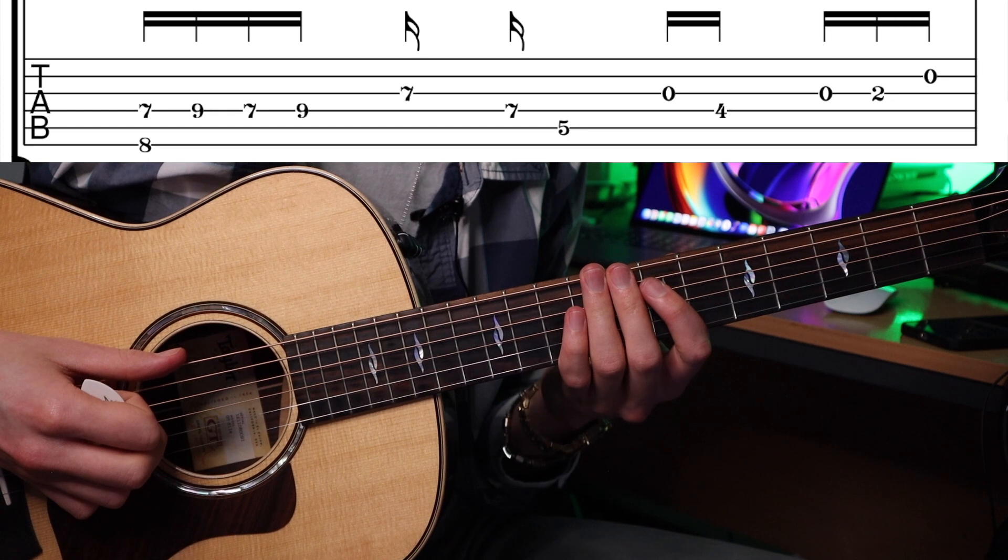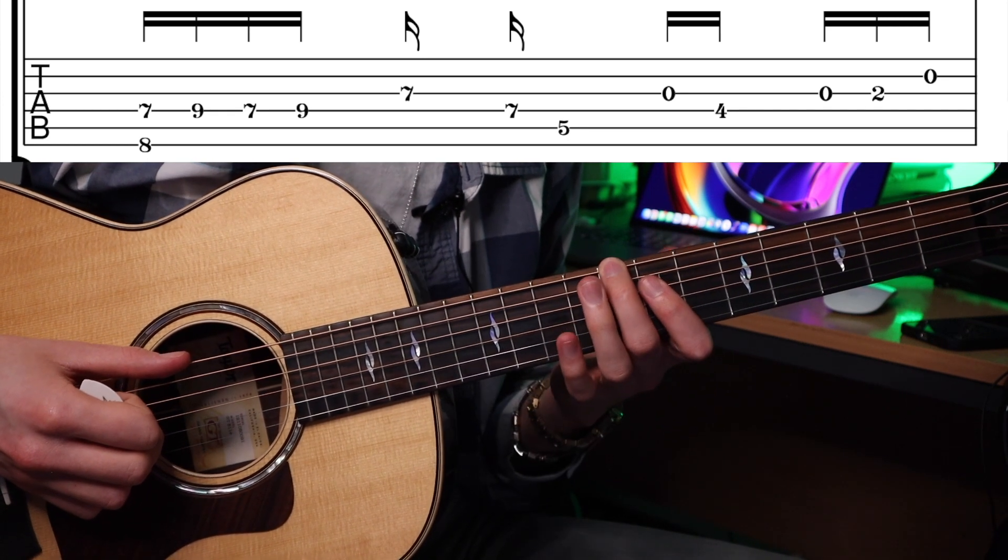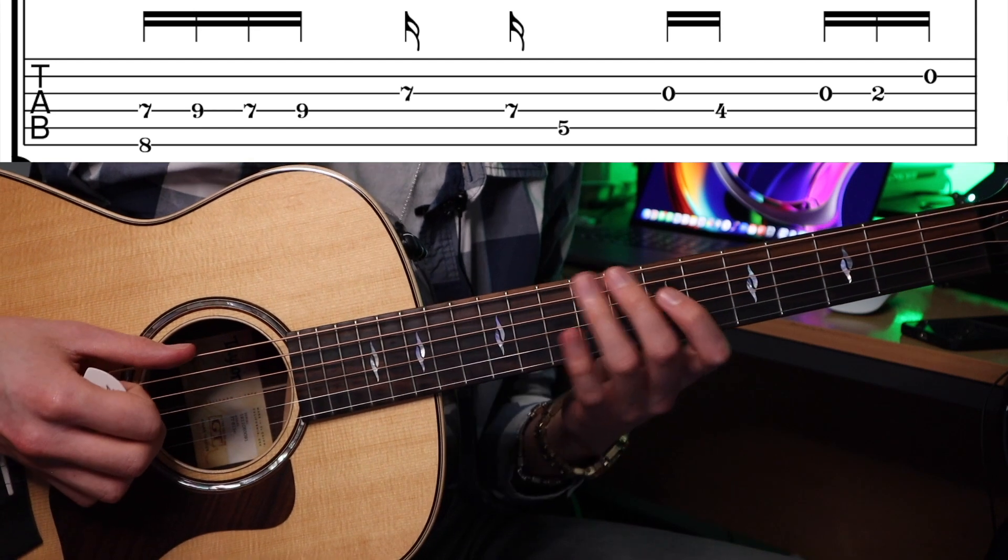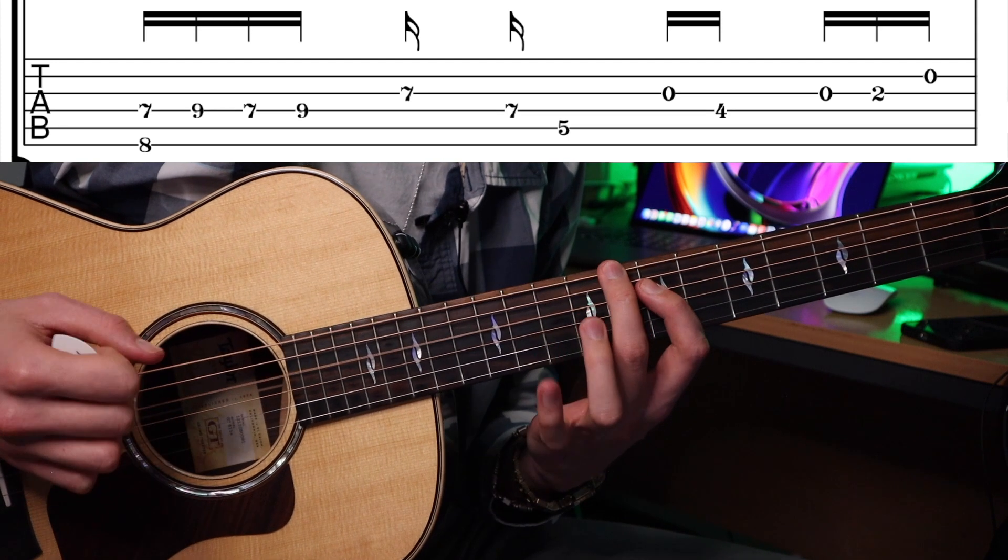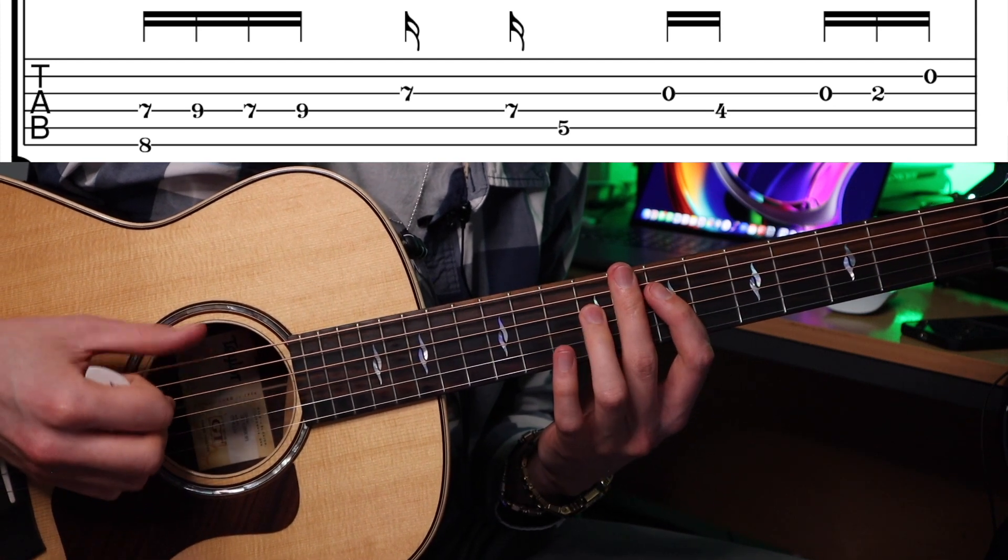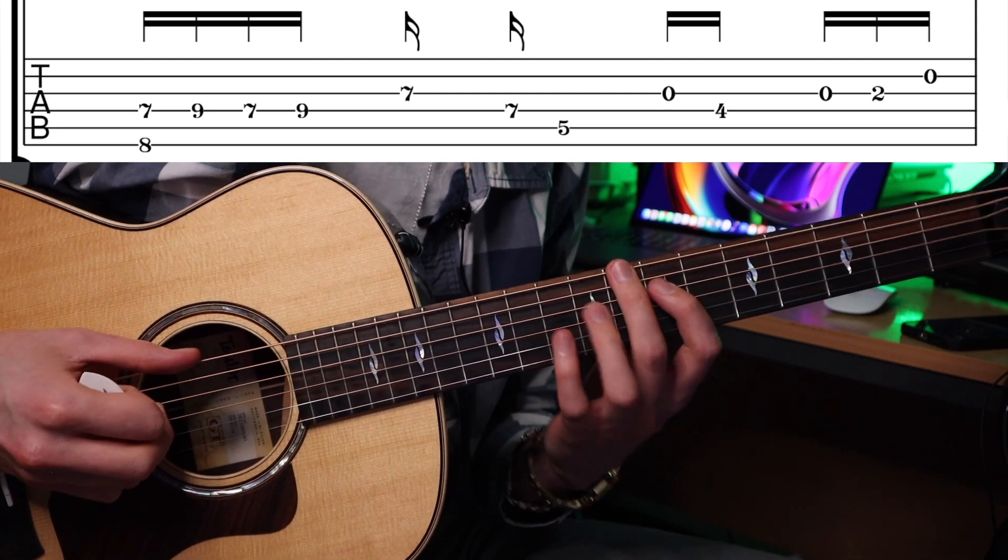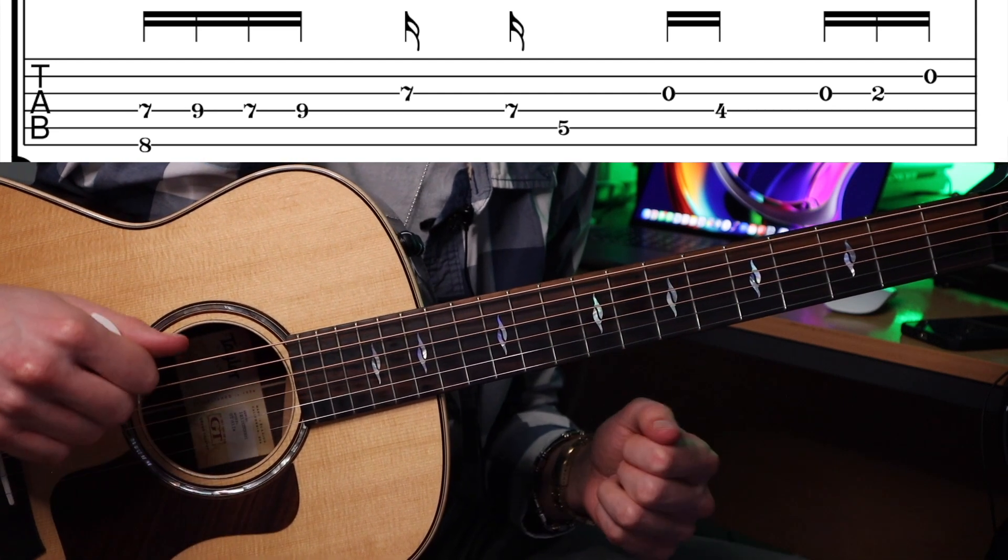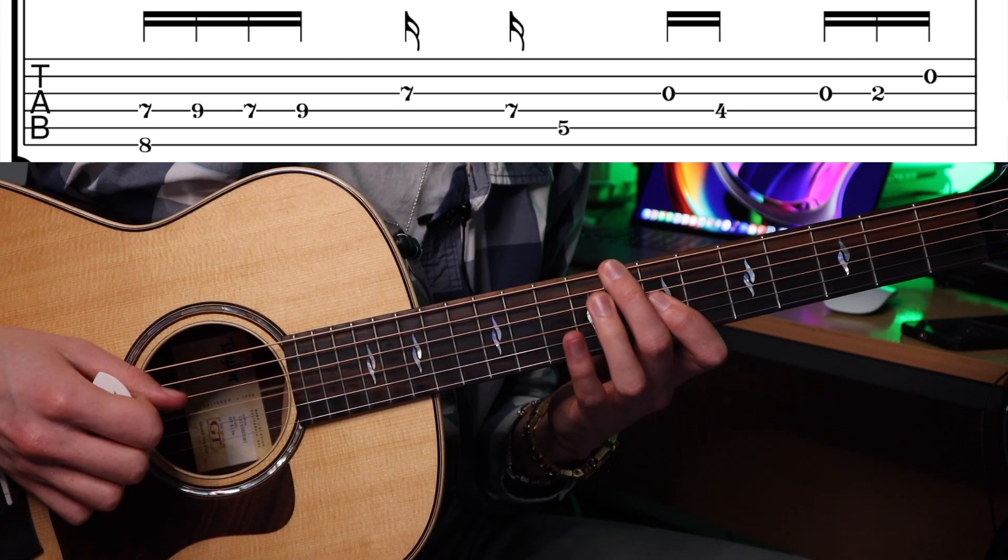So we start off with the second finger on the eighth fret of the low E and our first finger on the seventh of the D, hammered on and pulled off twice to the ninth fret of the D string. And what I'm doing here, I'm using my thumb for one of the strings and my second finger here for the D string, but really this is a thumb and fingerstyle riff.